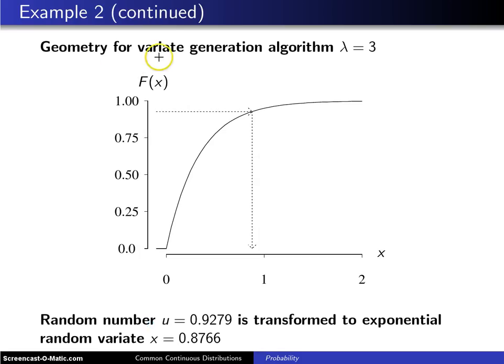The geometry associated with generating a random variate is as follows. If you assume that lambda equals 3, that allows us to draw one specific cumulative distribution function. This is an exponential random variable with a rate of 3, which is the same as saying an exponential random variable with a mean of one third.